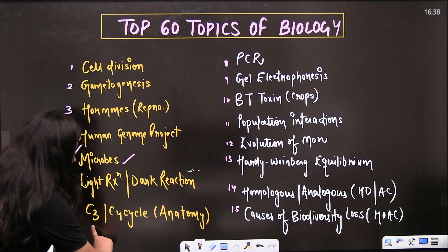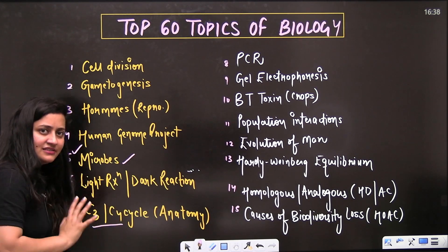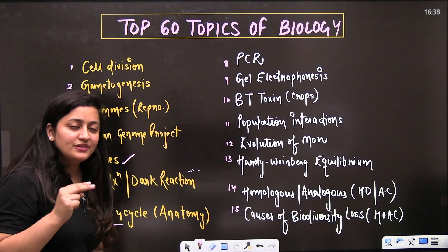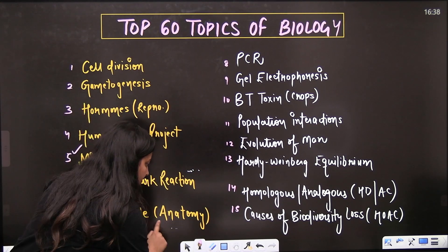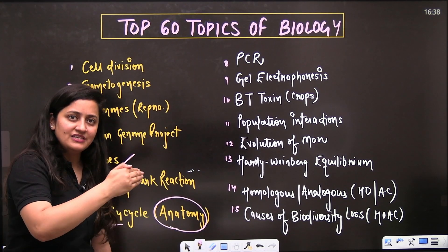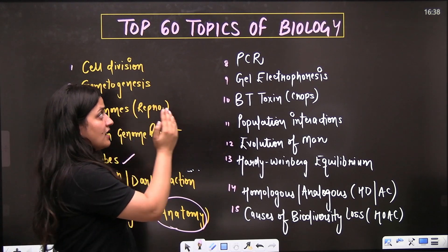Then comes the C3-C4 cycle - the differences in these two, the examples of C3-C4 plants, and even the leaf anatomy of the C3 plants and the C4 plants.